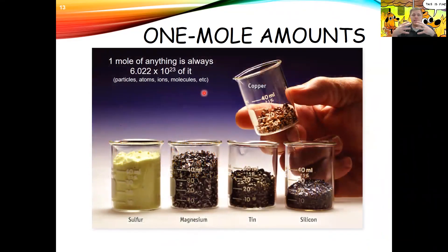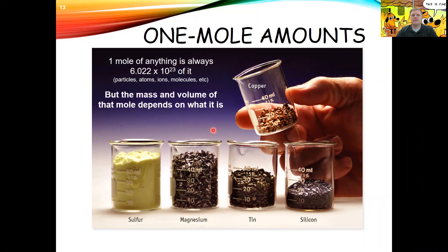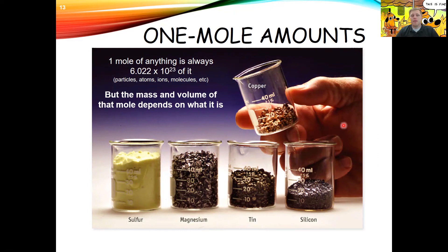A mole of anything is always 6.022 × 10²³, but how much volume is taken up and the mass of that mole depends on what you're talking about. A dozen eggs weighs more than a dozen marbles. A mole of copper will weigh more than a mole of sulfur, even though the sulfur takes up more volume. Here in these beakers is an actual picture with one mole each of copper, silicon, tin, magnesium, and sulfur.